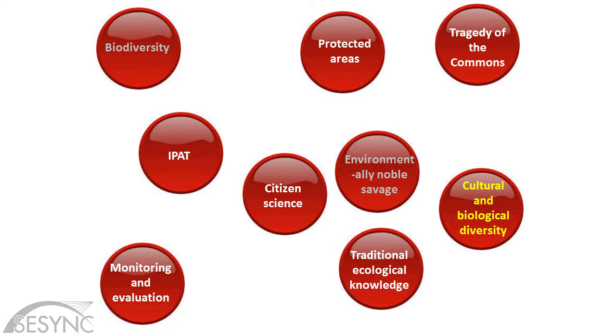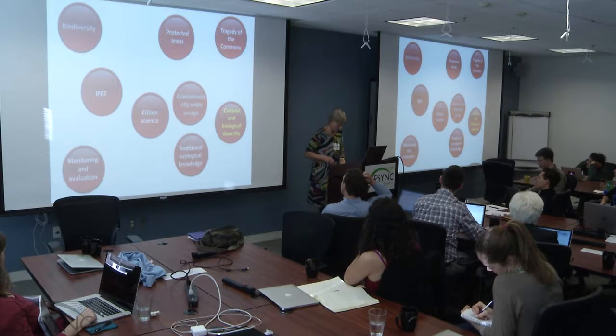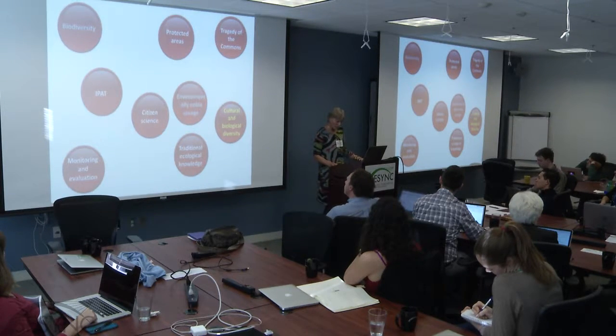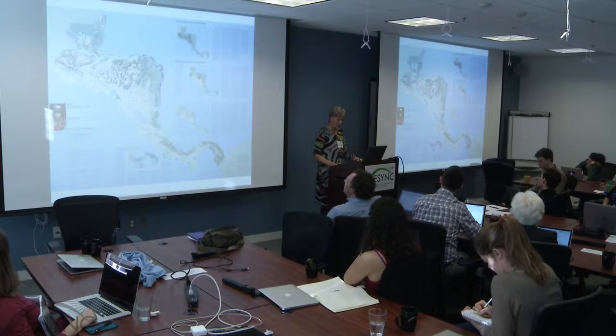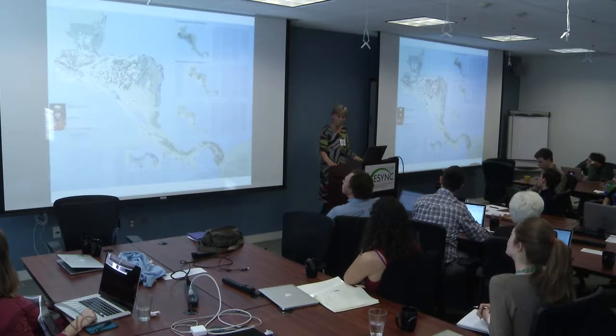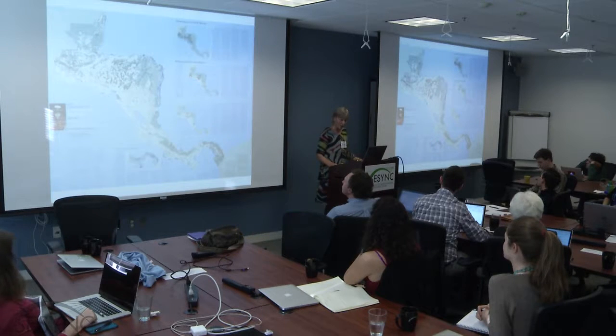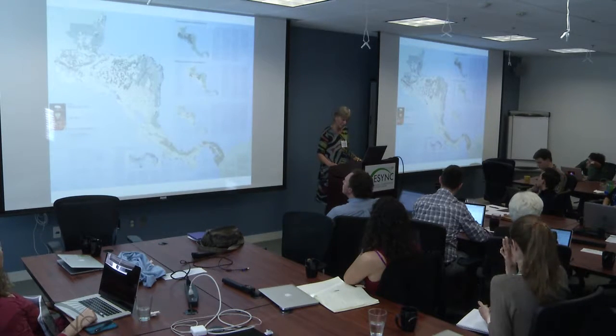We're now going to talk about cultural and biological diversity, which is closely related to the previous topic. This was the map that Chapin was working on with the National Geographic Society. He showed that the homelands of Indians in Central America—the jagged volcanic highlands of Guatemala and the heavily forested Caribbean coast—are where both kinds of diversity persist, unlike the developed Pacific side, which is basically shorn of natural vegetation and of its indigenous populations. These correlational studies immediately raise questions of causality.